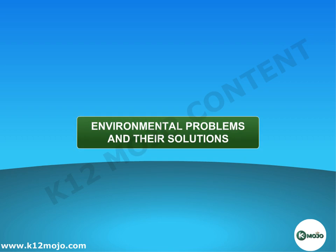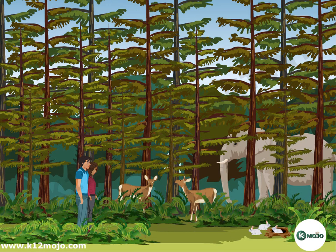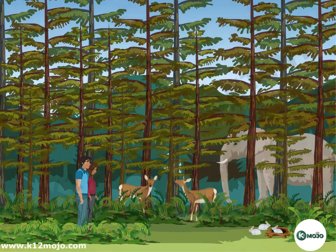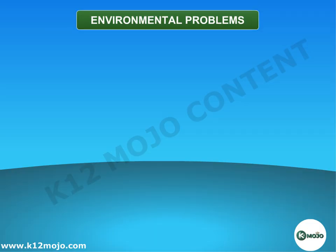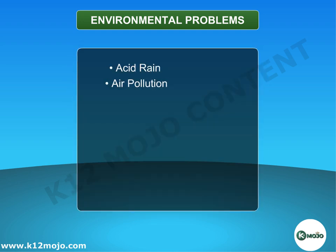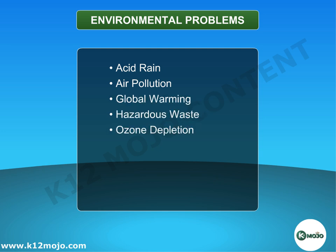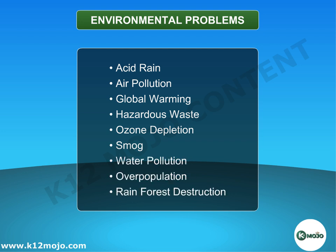Environmental problems and their solutions. Environment is the surrounding in which the organisms live. We have a big environmental problem. Some of the largest problems now affecting the world are acid rain, air pollution, global warming, hazardous waste, ozone depletion, smog, water pollution, overpopulation and rainforest destruction.